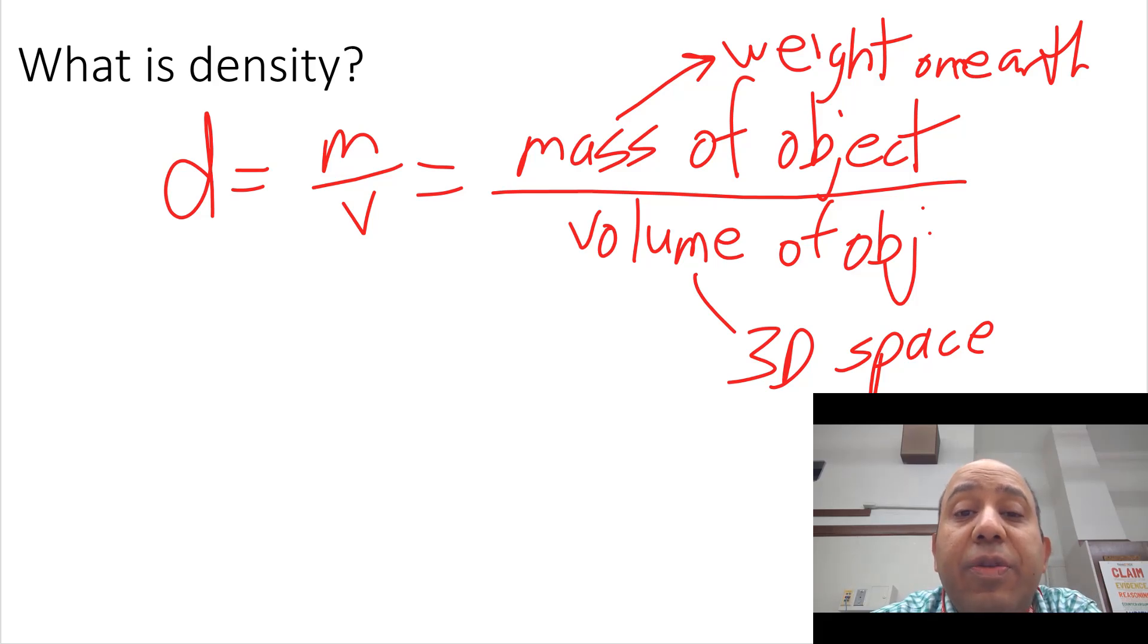So, in that lab that we did with the blocks, we saw that some objects floated and some objects sank. You notice that the ones that sank had a greater mass in grams than volume in centimeter cubed. And we notice that the ones that floated had a greater volume in centimeter cubed than mass.